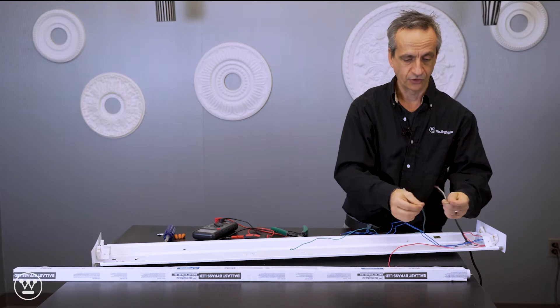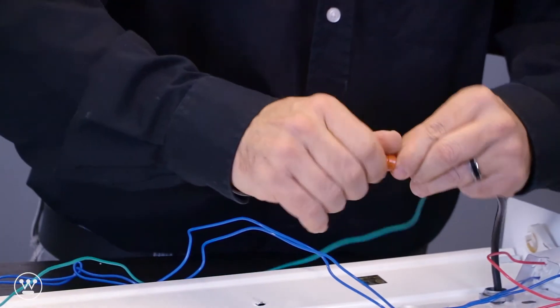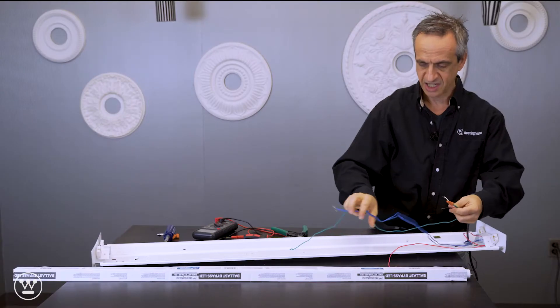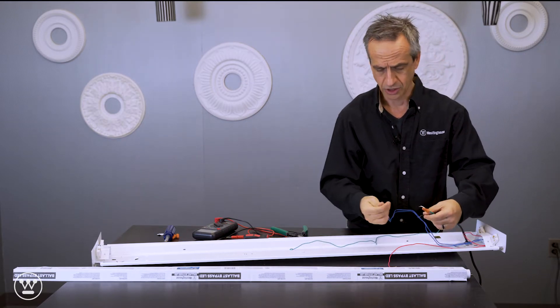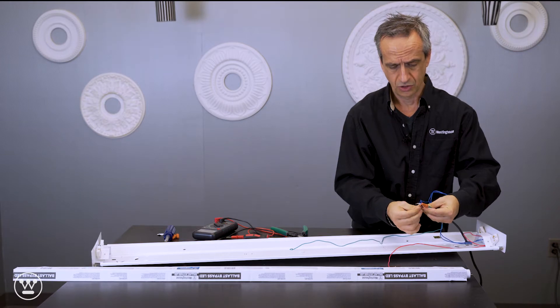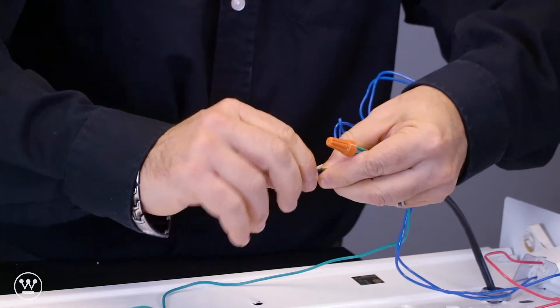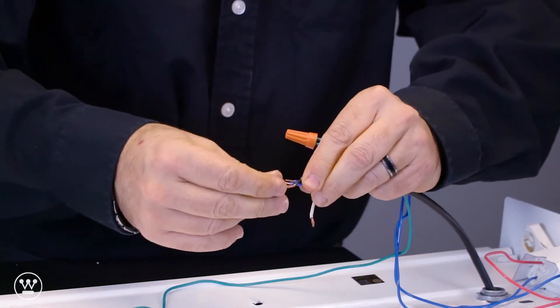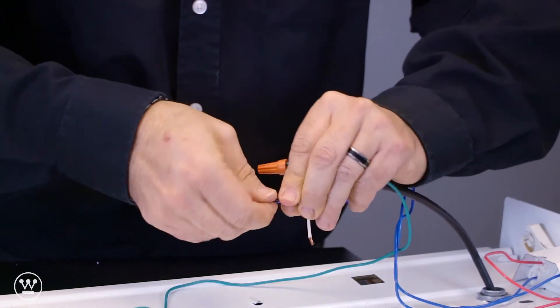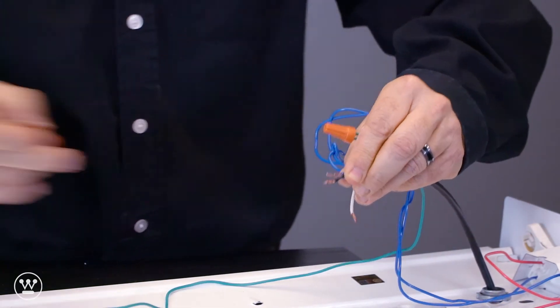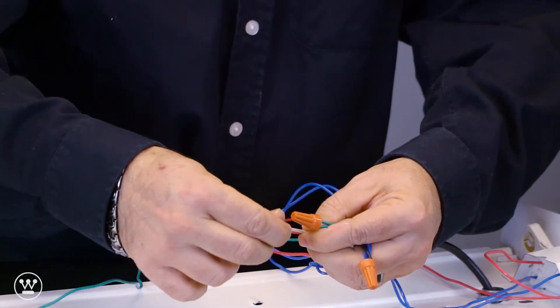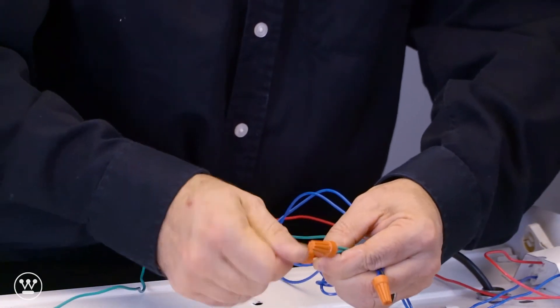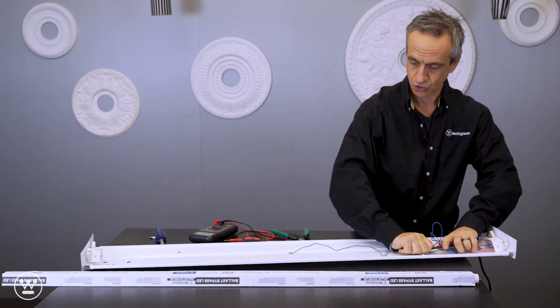Next we make the wiring connections. Ground to ground. In this case, since it is a single ended wiring connection, you can hook up either the red or the blue to the input line. And the other wire goes to the neutral.